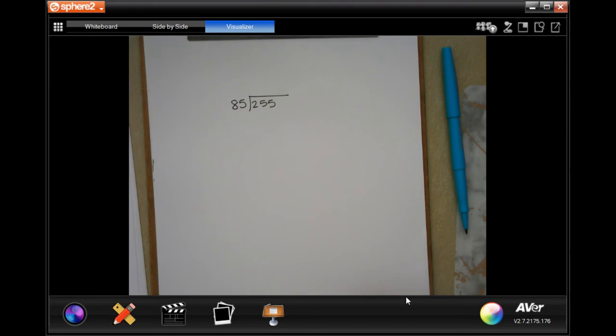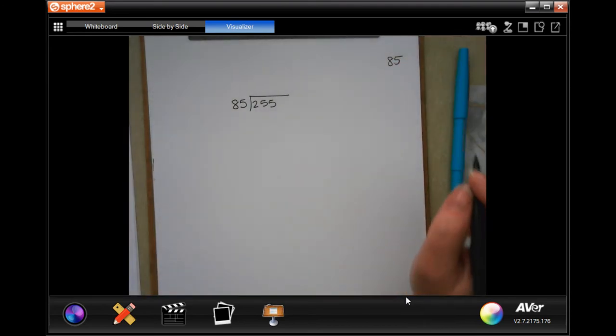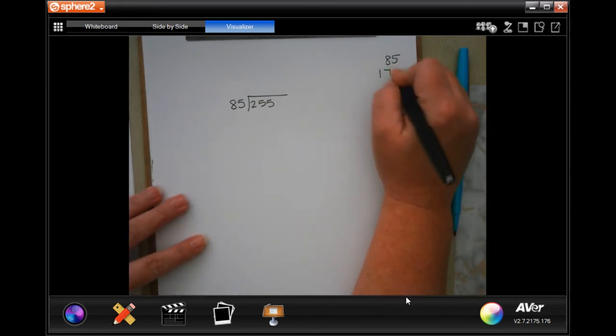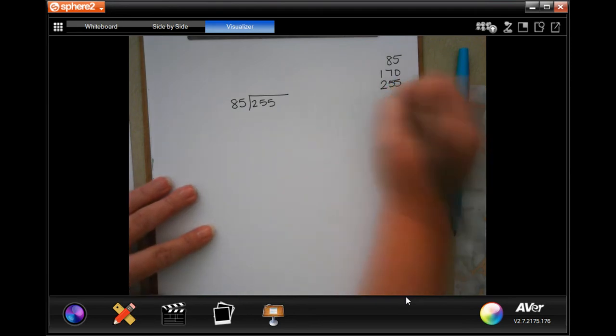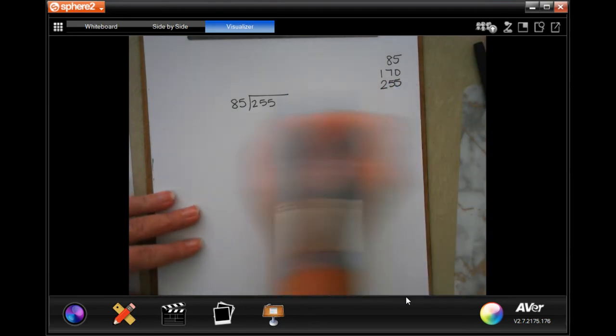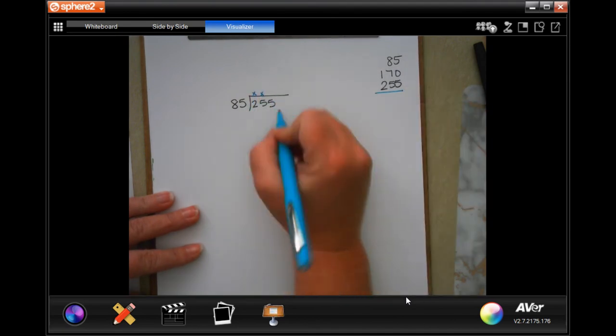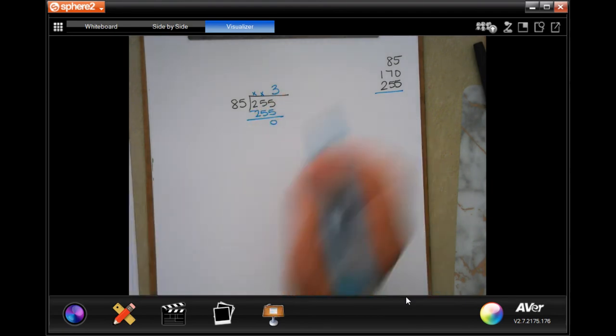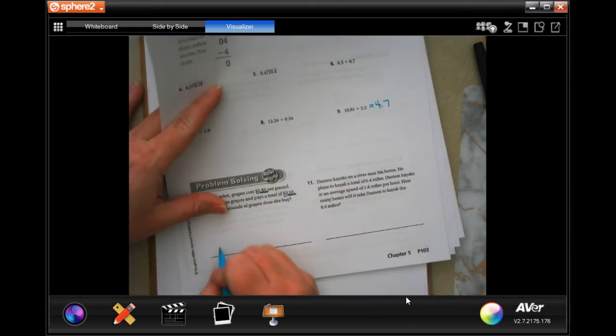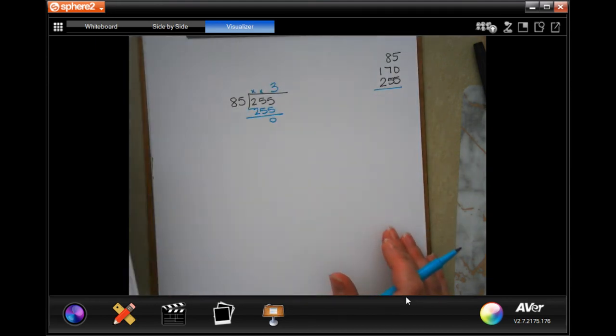So I'm going to write down my multiples of 85 because I don't know those. And then 255. So we got it. So 85 is not going to go into two or 25, but it looks like it will go into 255, three times, three times 85 was 255 subtracting it zero. So that would be three pounds. Make sure you write your work down, guys.